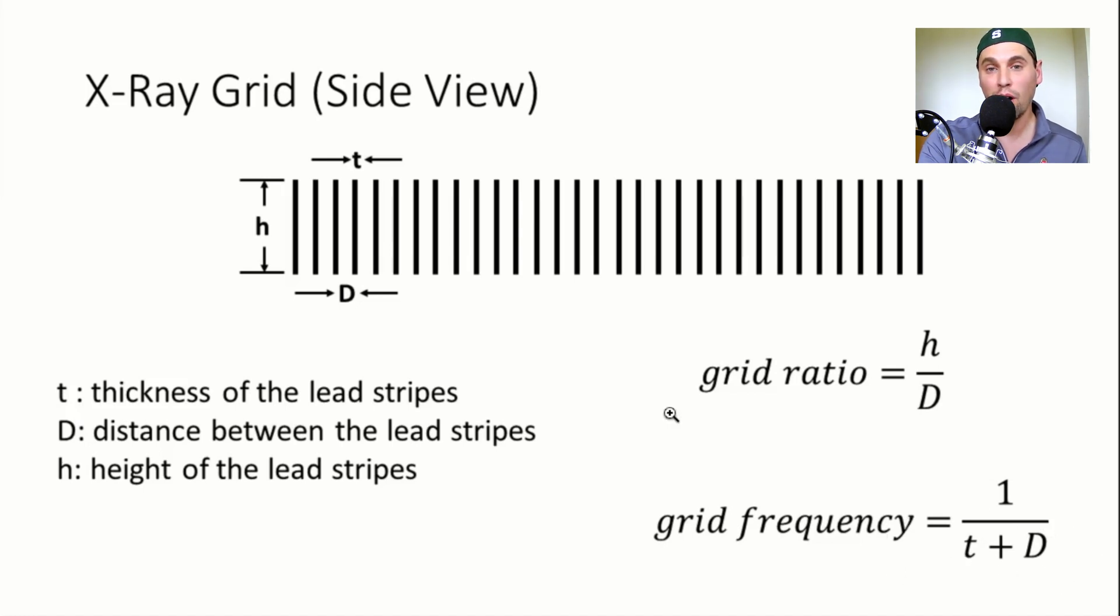And things we want to know is that the grid ratio, higher grid ratios lead to more x-rays being stopped. And again, preferentially more scatter x-rays being stopped. So they're going to be better at blocking scatter at the higher grid ratios. But when the grid ratio starts to get too high, you also will be blocking more of your primary radiation. And that's why there's a tradeoff between the grid ratio that you want to use.